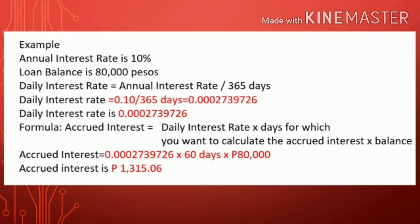Example 2: The annual interest rate is 10% and the loan balance is 80,000 pesos. Daily interest rate equals 0.10 divided by 365 days, which equals 0.0002739726. Accrued interest equals 0.0002739726 times 60 days times 80,000 pesos. Accrued interest is 1,315.06 pesos.